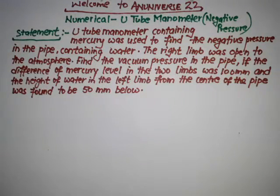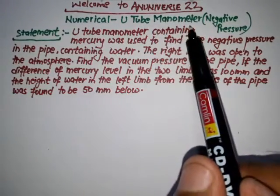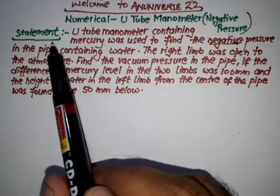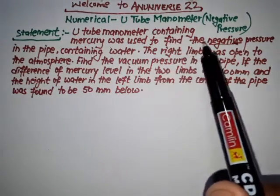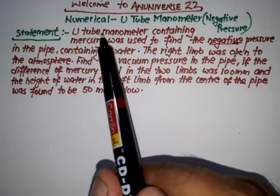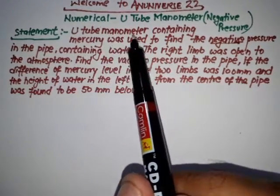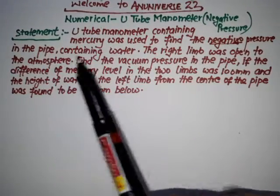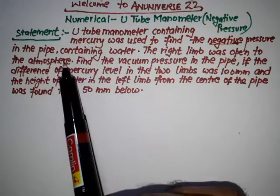Hello friends, welcome to NUniverse2. In this video we will solve a numerical based on a U-tube manometer in the case of negative pressure. The problem statement: a U-tube manometer containing mercury was used to find the negative pressure in the pipe. Mercury is the heavy liquid in the manometer, and the pipe contains water.